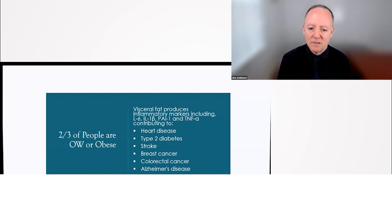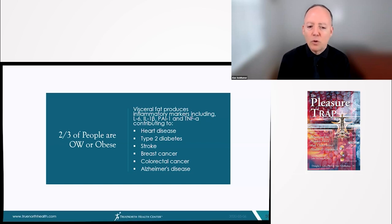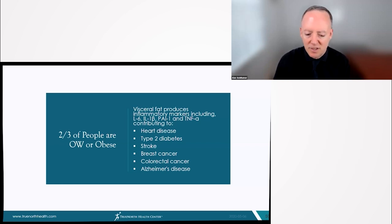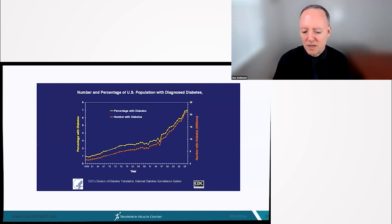...like IL-6 and TNF alpha will contribute to heart disease, type 2 diabetes, stroke, breast cancer, colorectal cancer, and Alzheimer's disease. These are the conditions that are killing most of the people that you know.